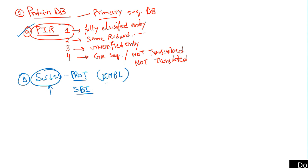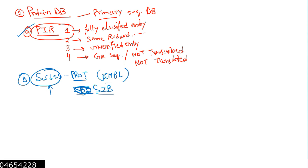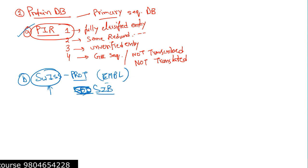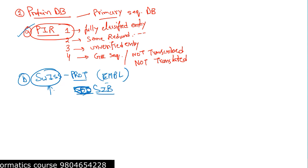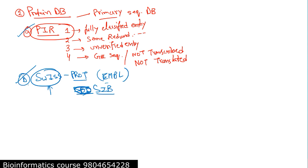Swiss-Prot is named because the Swiss Institute of Bioinformatics maintains it, and 'Prot' is the short form of protein. Swiss-Prot carries highly annotated entries — every single area of a sequence is annotated and marked with its function, what kind of structure it forms, and any other available information. It also has very low redundancy, so it satisfies both important parameters of being a good database.